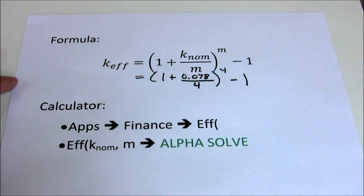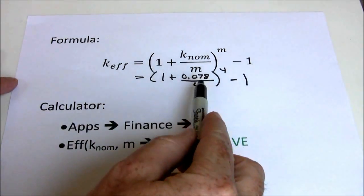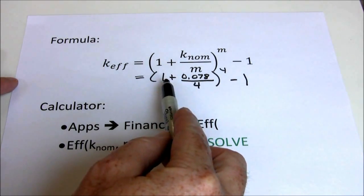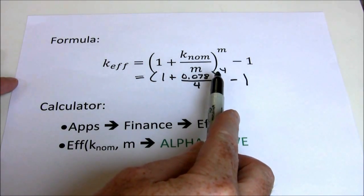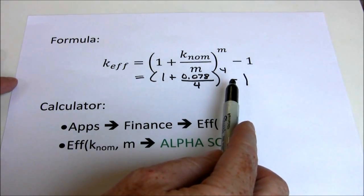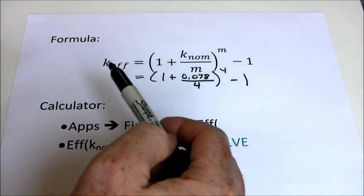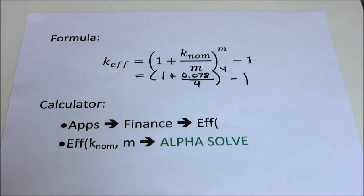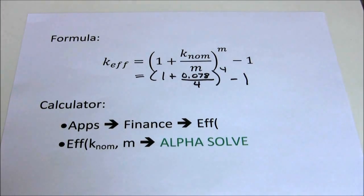Another thing to be careful about is order of operations. Do this first, add the 1, raise to the 4th power and then subtract off 1. Our final answer here is going to be in a decimal which we can then convert back to a percentage value. So let's go through that real quick.